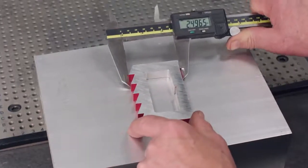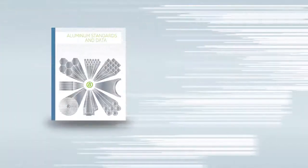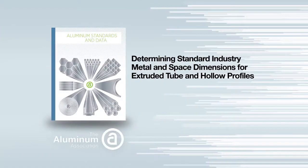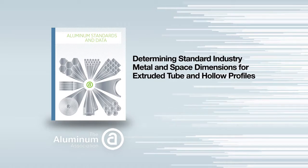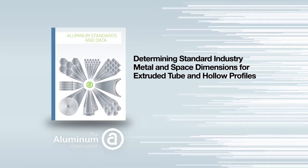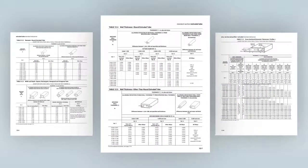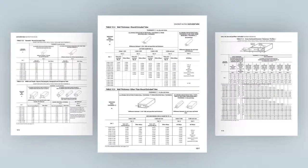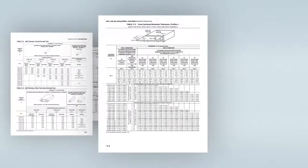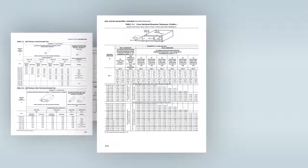This video will help guide you through the use of the Aluminum Association's Aluminum Standards and Data Publication to determine if your extruded tube and hollow extruded profile meets standard industry dimensional tolerances. Tolerances for round, square, and rectangular extruded tubing are found in tables 12.2 through 12.4, while hollow extruded profiles are in table 11.2.